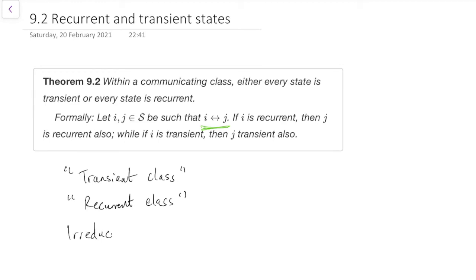Similarly, if we happen to have an irreducible Markov chain, you should remember the definition of irreducible from previous section 7. Irreducible meant everything was the same communicating class. So in an irreducible Markov chain, either every state is transient or every state is recurrent.